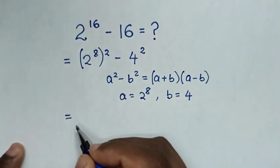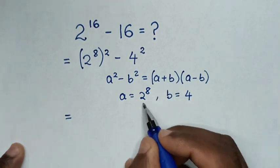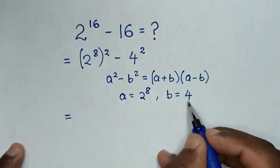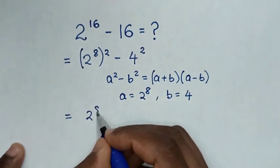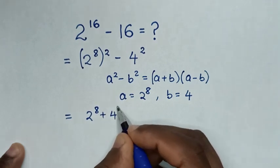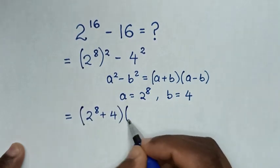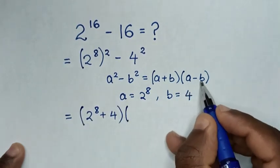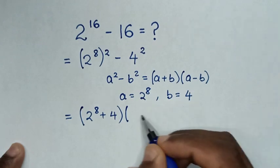So it will be equal to: (a + b) is (2^8 + 4), and (a - b) is (2^8 - 4).